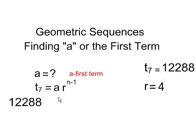In this case, 12,288 is equal to a times 4, which is my common ratio, to the exponent 6, because I'm dealing with my 7th term.